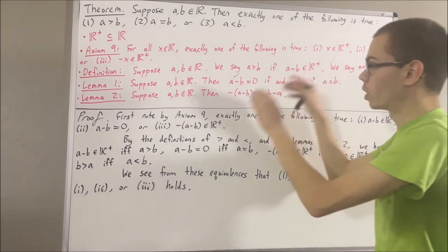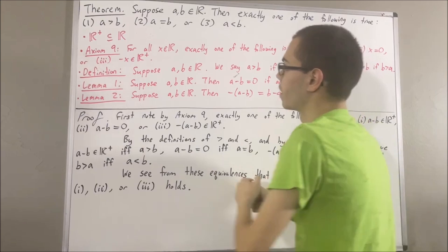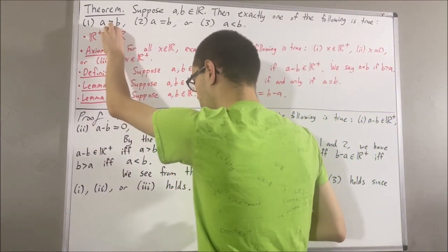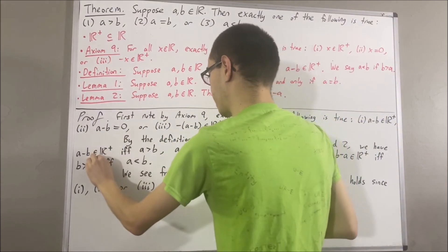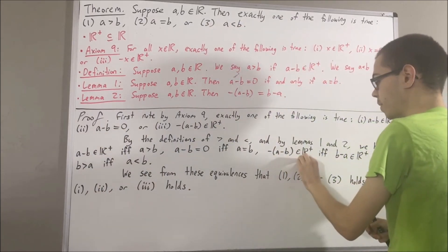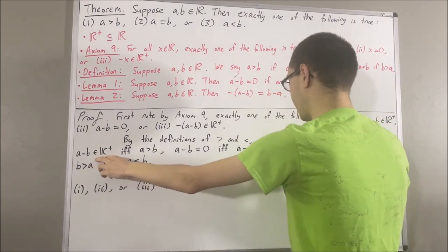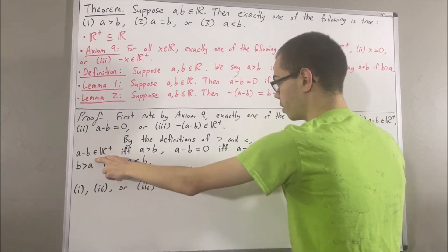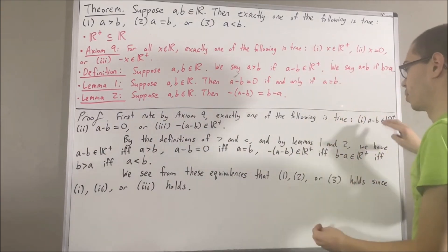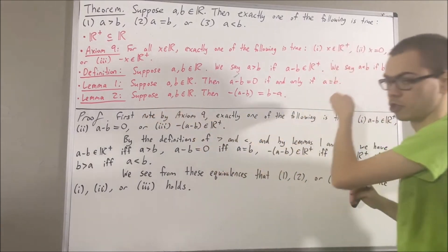Finally, what happens if a is greater than b and a is less than b? By our equivalences, since a is greater than b, a minus b is a positive real number; and since a is less than b, the negative of a minus b is a positive real number. But according to Axiom 9, it cannot be the case that both a minus b and the negative of a minus b are positive real numbers. So we reach a contradiction.